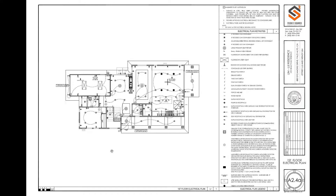We are going to send you a PDF that is going to have your floor plan on the left side, and on the right side there are going to be some notes at the top, and the legend at the bottom. The way of reviewing this electrical plan is going room by room, checking the different symbols that we are proposing, and then finding these symbols in the legend to see what those are.